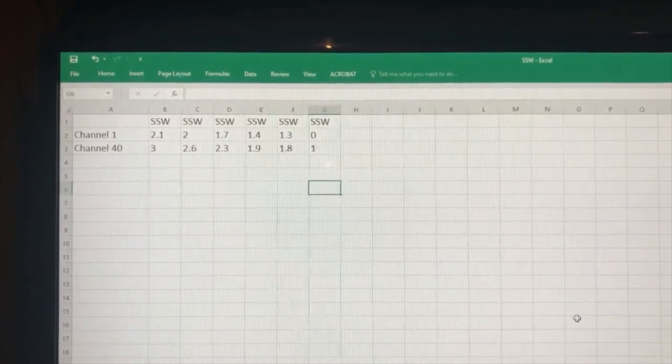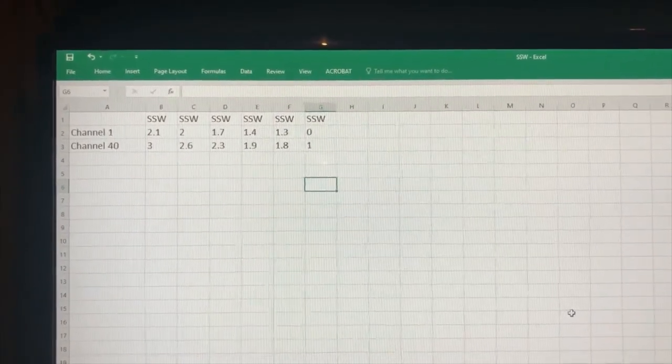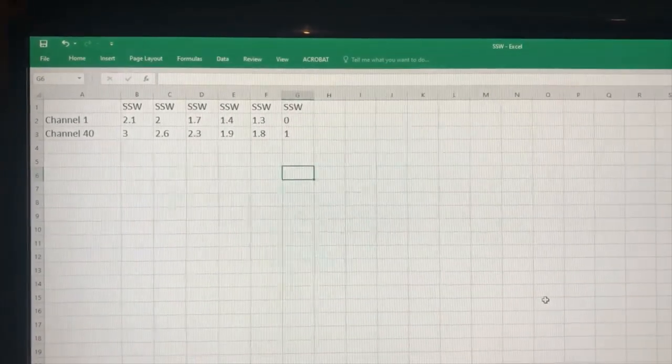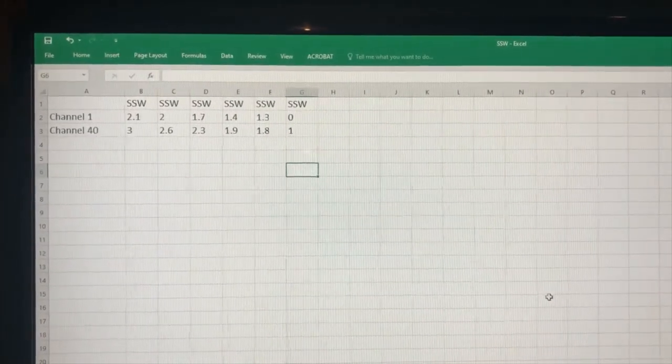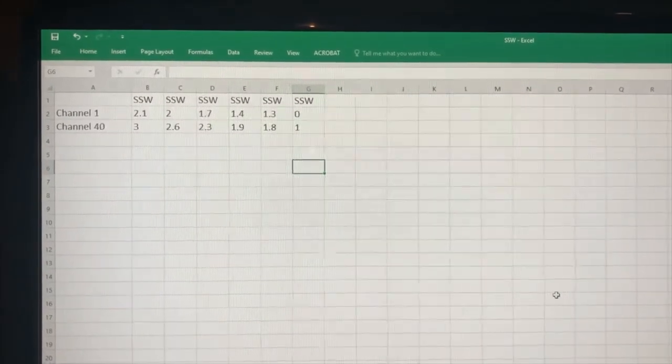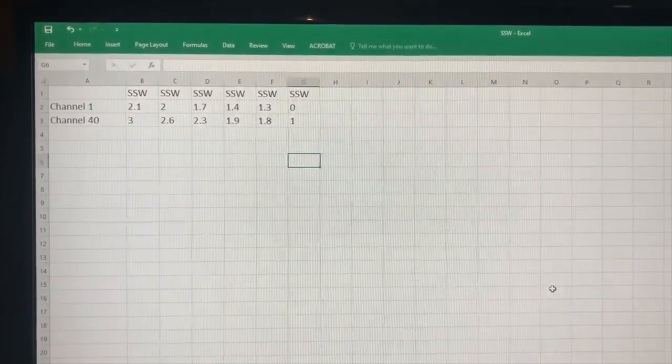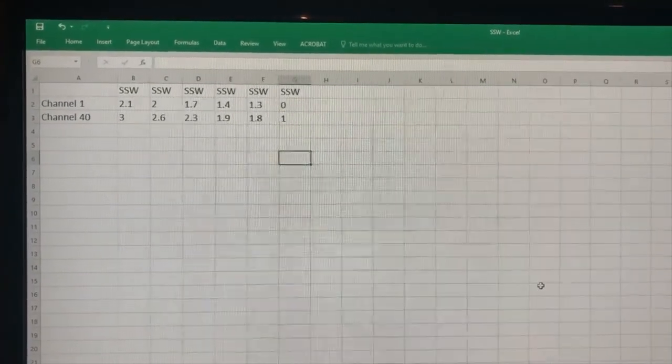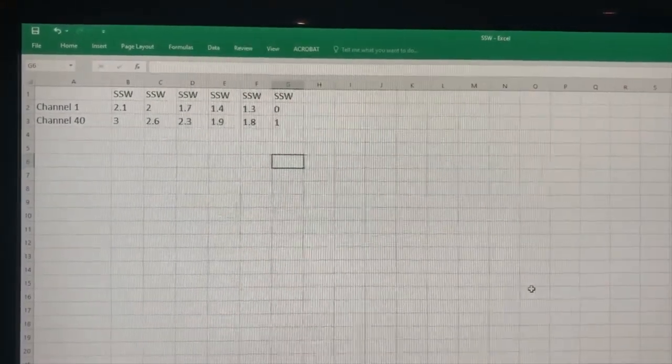Here's a spreadsheet of my SWR as I was trimming the radio. You can see on channel 1 I started at 2.1 and ended up pretty close to 0, and on channel 40 it started at 3 and I got it down to around 1. Turned out much better than I thought it would.